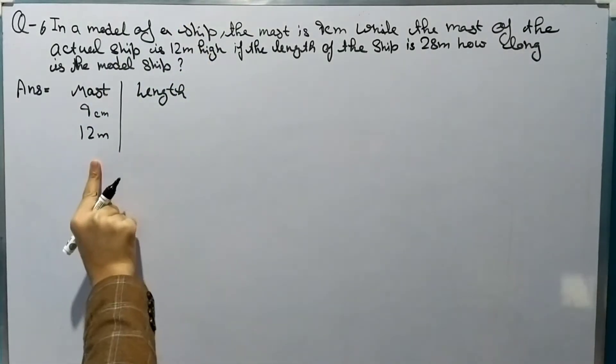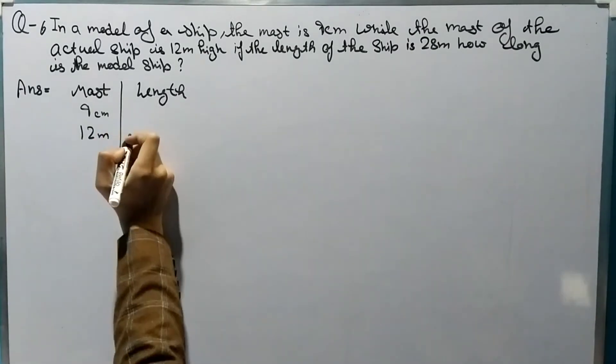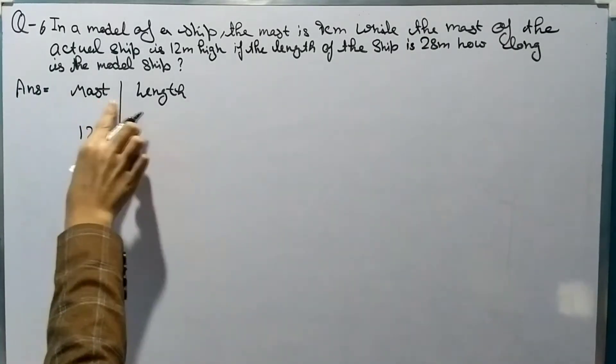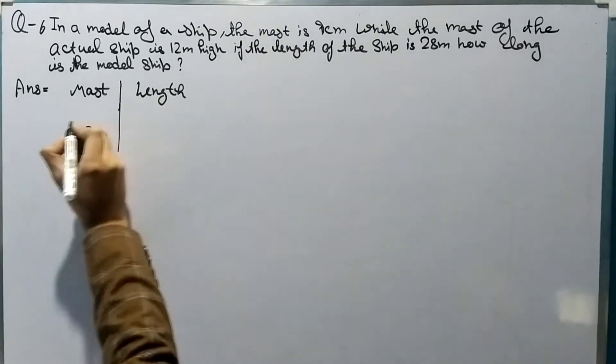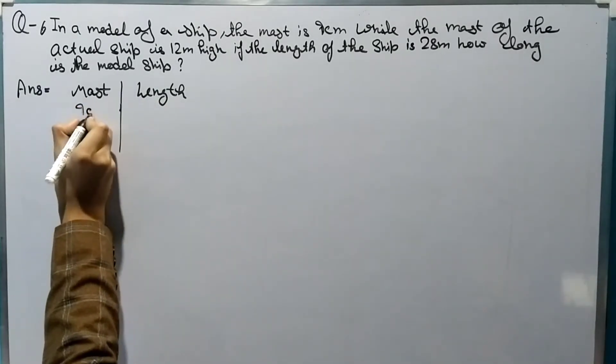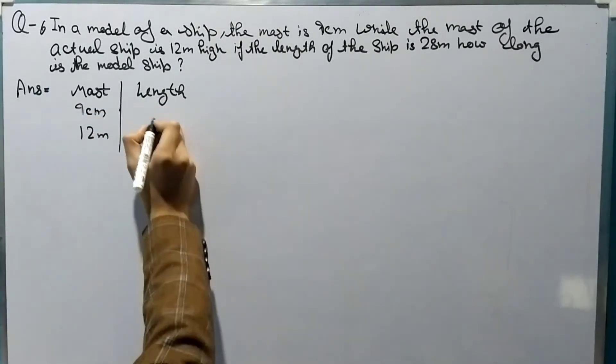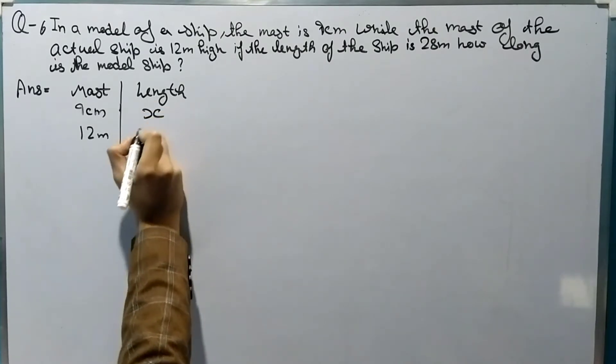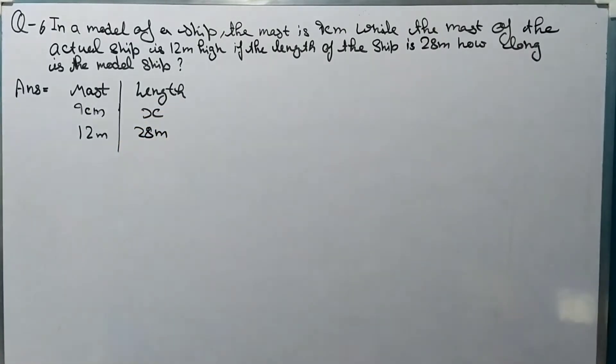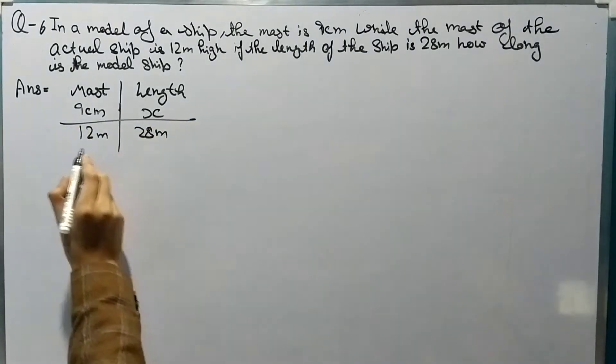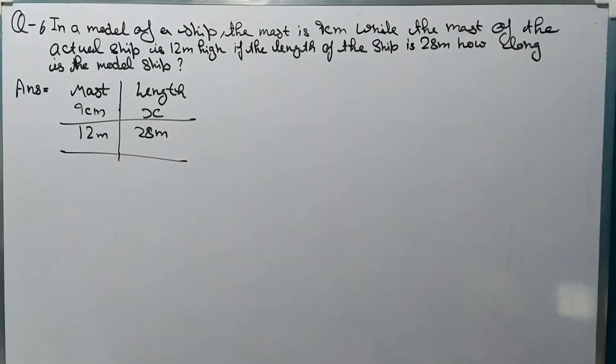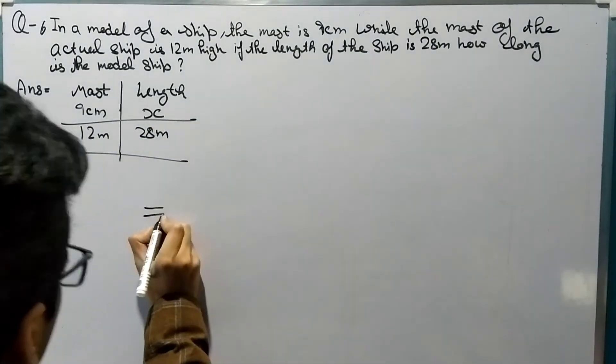Actually it's mast, so after this actually it should come here, it should be here only. Here it will be x and here it will be 28 meter. So now we need to find the value for x.